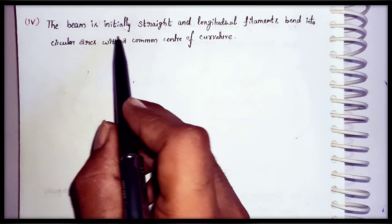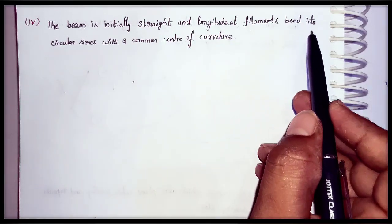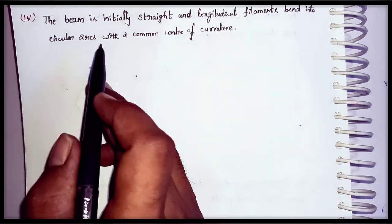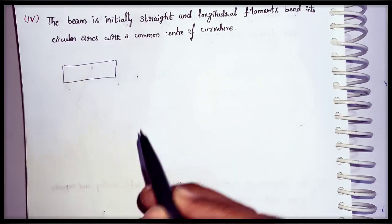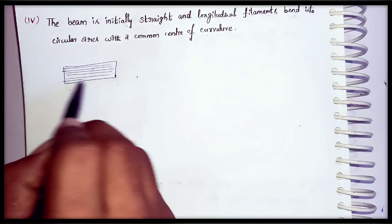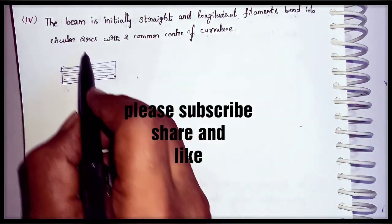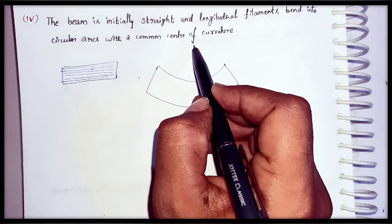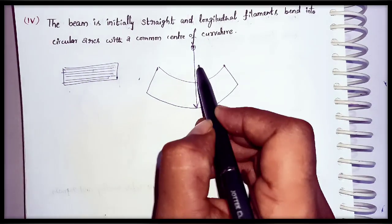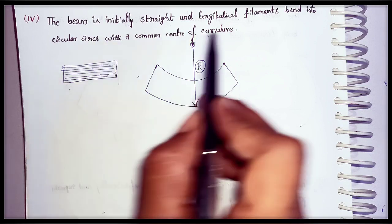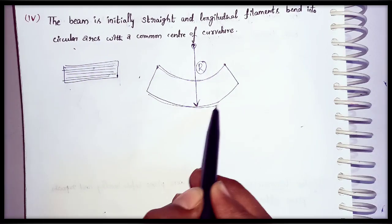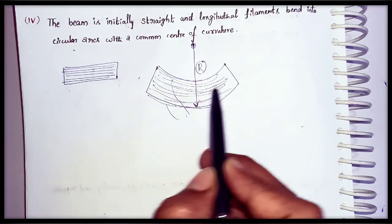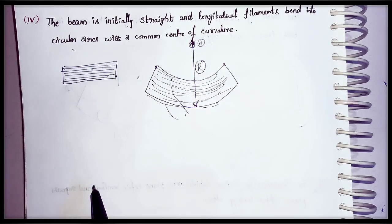The next important assumption is that the beam is initially straight and the longitudinal filaments bend into circular arcs with a common center of curvature. The beam is straight before bending, and after bending, there is a center point O from which the radius of curvature is measured. All circular arcs — the outer, inner, and intermediate filaments — have the same center of curvature O.